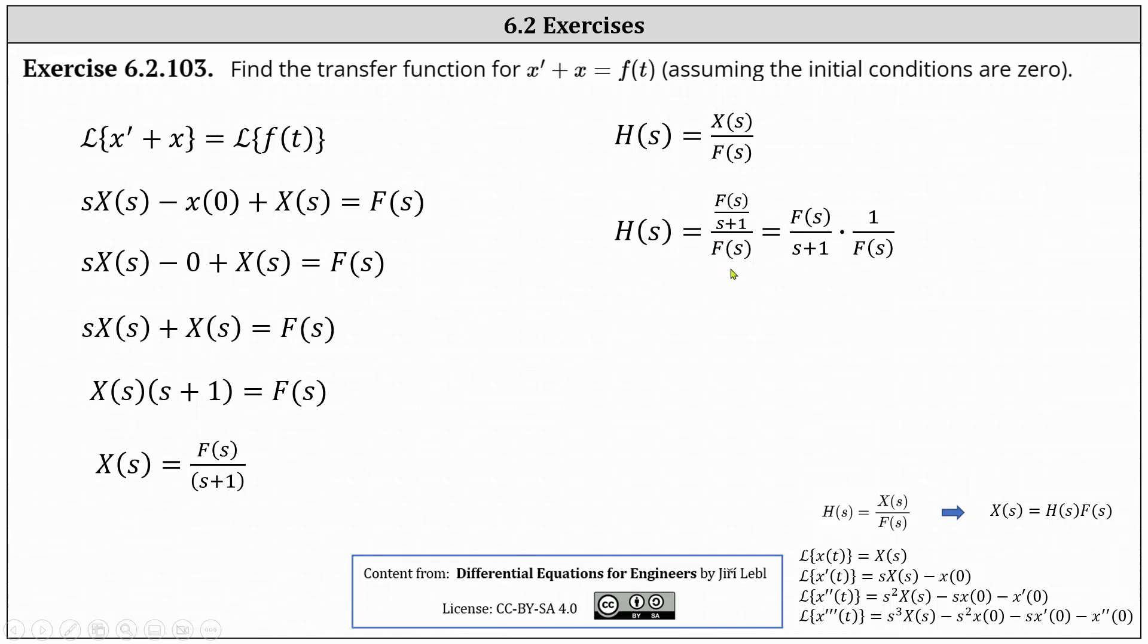and dividing by big F of s is the same as multiplying by one over big F of s. Notice big F of s simplifies out, giving us the transfer function big H of s equals one divided by the quantity s plus one. I hope you found this helpful.